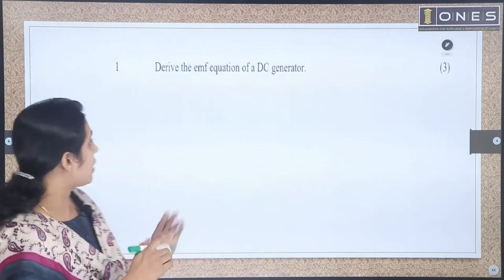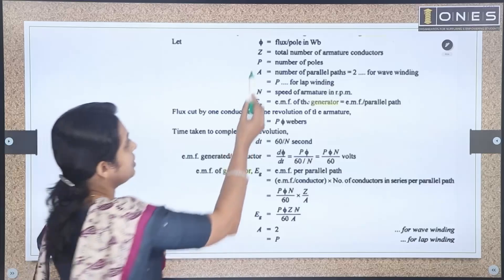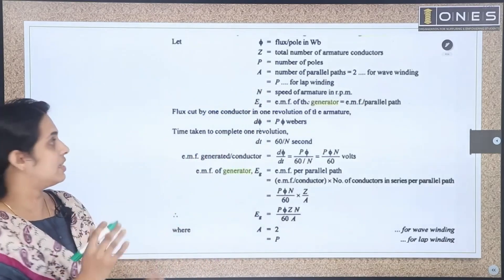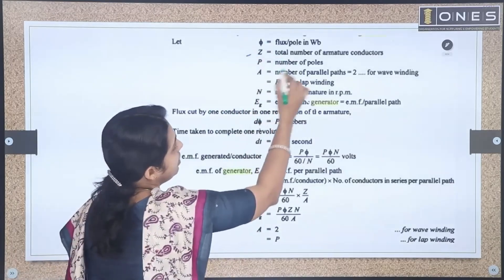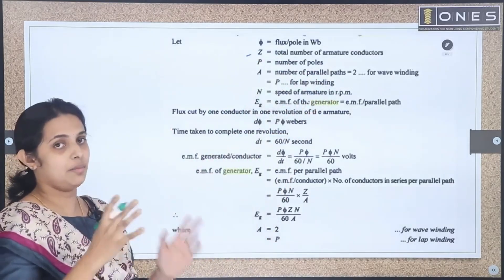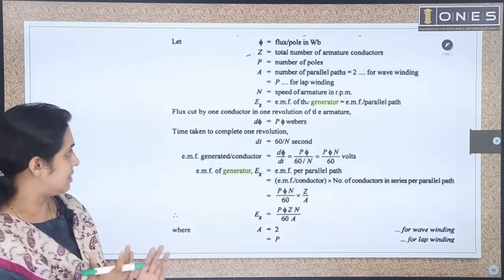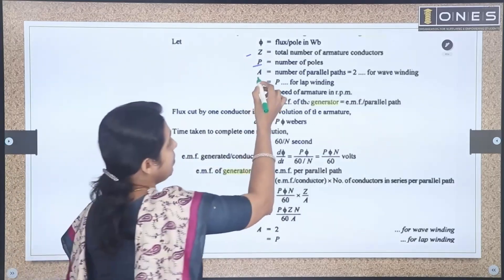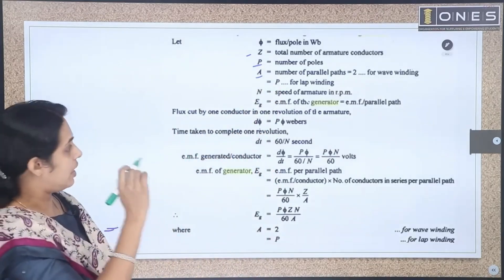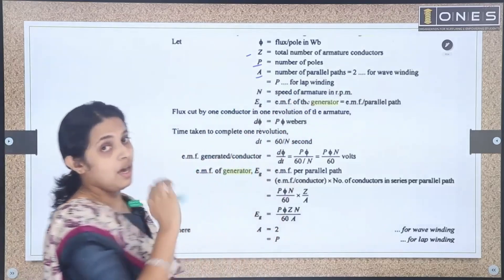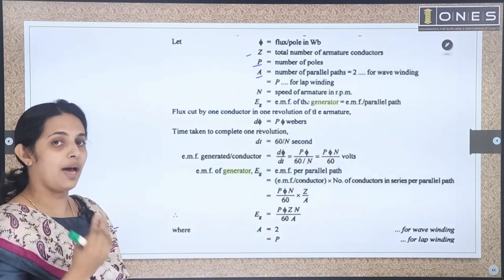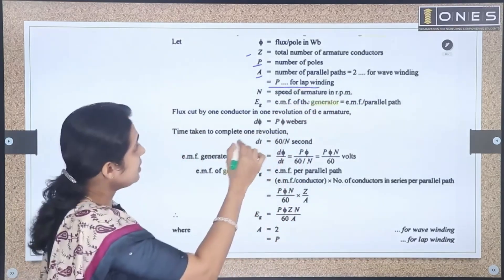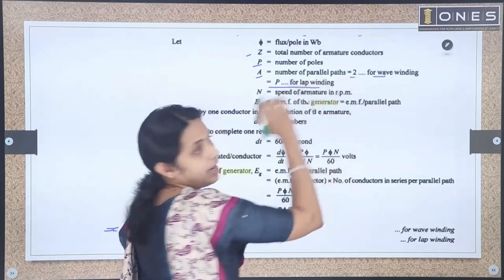Let's define the variables. First, φ (phi) is our flux per pole. Z is the total number of armature conductors. P is the number of poles. A is the number of parallel paths. For lap winding, A is equal to P. For wave winding, the number of parallel paths is 2.